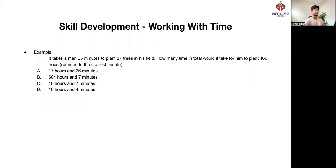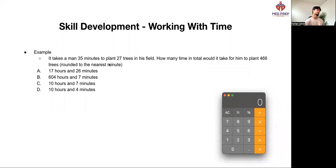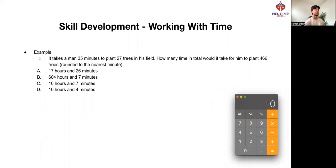Let's go through this question together. Let's pull up our calculator so we can calculate this. If it takes this man 35 minutes to plant 27 trees and we want to see how much time it takes to plant 466, then what we do first is figure out how many groups of 27 this man plants. So 466 divided by 27 - this is how many groups of 27 this guy plants - gives us 17.26.